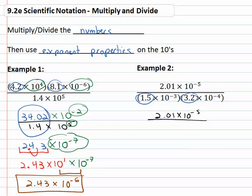In the denominator, 1.5 times 3.2 is 4.8, and then we'll use our exponent properties on the tens. Adding the exponent negative three and negative four gives us negative seven.